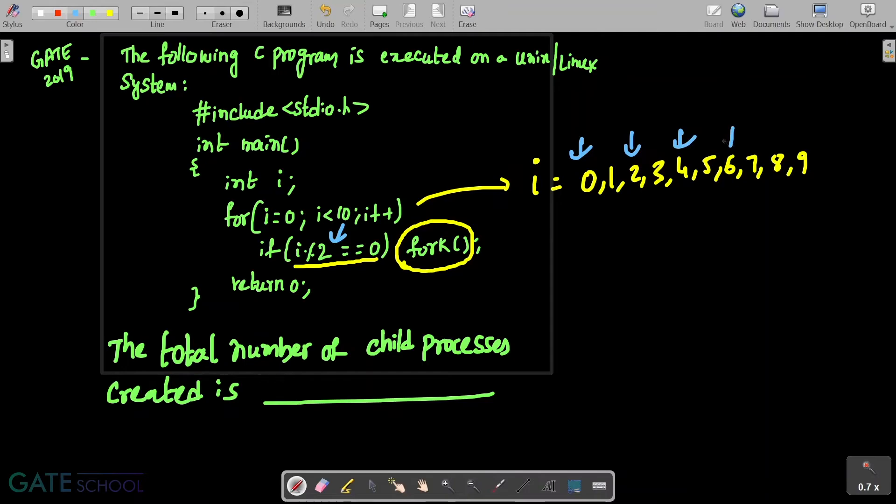Whenever you are considering i value like i=0, i=2, i=4, i=6, and i=8, exactly at these points the conditional expression will be evaluated to true and it is going to call this fork system call.